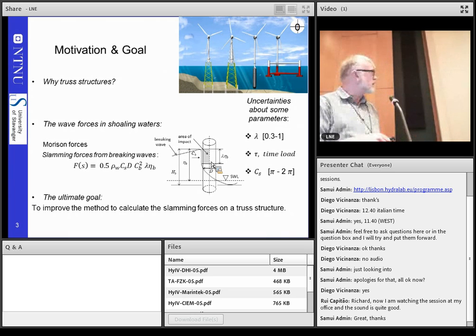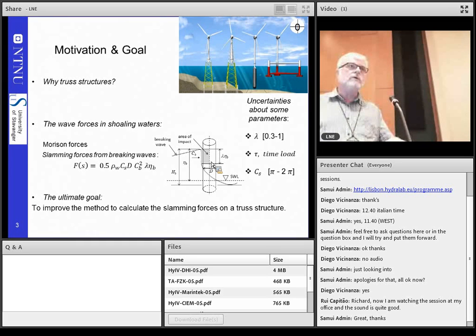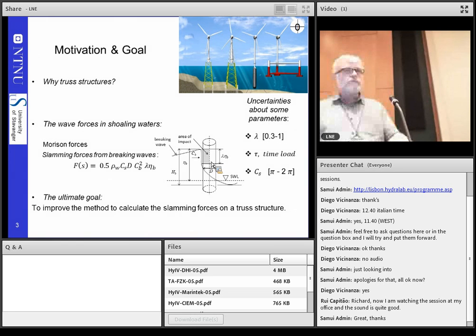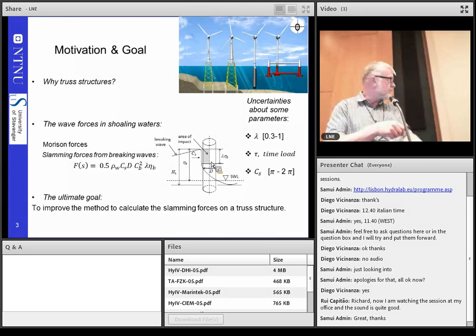The question is this formula for the slamming forces, which has been used, and where this factor here, CS, which is the slamming factor, and the lambda, which is called the curling factor, representing how much of the crest height is actually influencing the structure when it hits. So, this simplification is for a slender cylinder, and then what is the value of lambda? Maybe somewhere between 0.3 and 1. What is the value of CS? Maybe somewhere between pi and 2 pi. So, it seems to be very crucial to know which values will be to be used if you have a truss structure, because these values here are obtained for typical cylindrical structures.